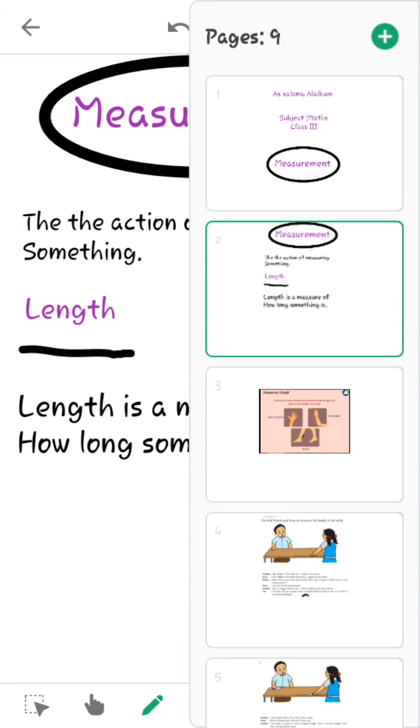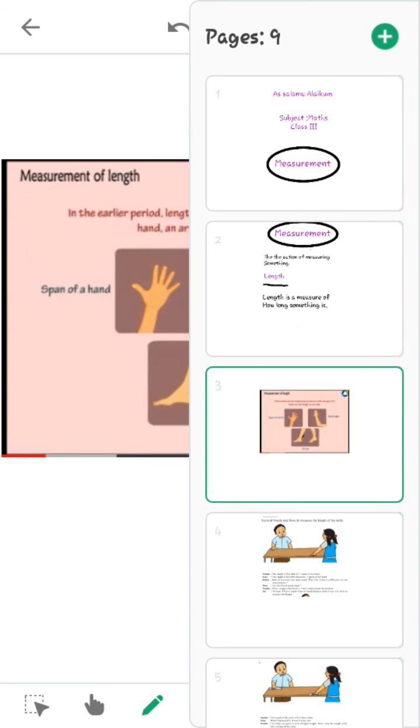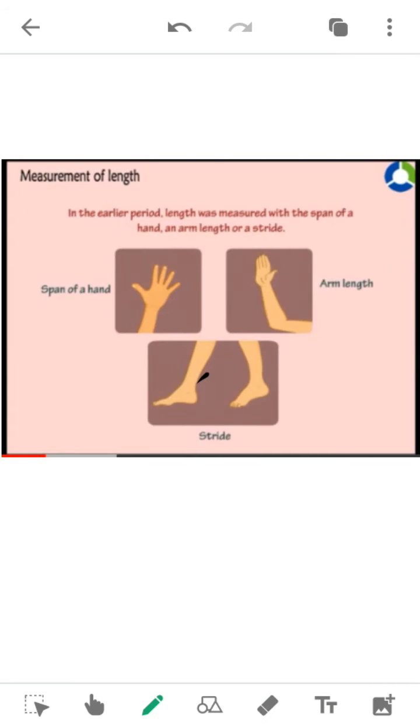For example, in the earlier period, length was measured with the span of a hand, arm length, and foot sight.